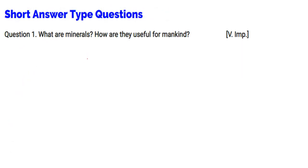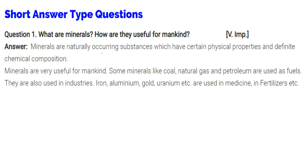Now short type questions. What are minerals? How are they useful for mankind? So minerals, these are naturally occurring substances which have certain physical properties and definite chemical composition. So minerals are very useful for mankind. Some minerals like coal, natural gas, and petroleum, these are used as fuels.